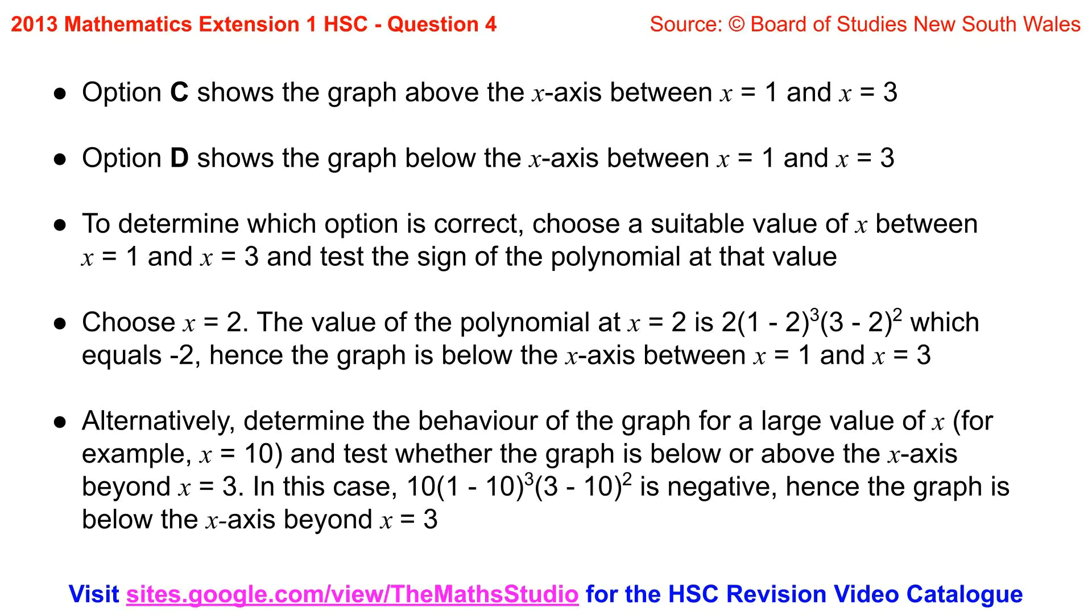Alternatively determine the behavior of the graph for a large value of x. For example x equals 10 and test whether the graph is below or above the x-axis beyond x equals 3. In this case 10 times 1 minus 10 all cubed times 3 minus 10 all squared is negative. Hence the graph is below the x-axis beyond x equals 3.